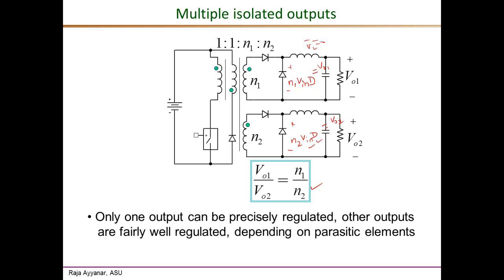Only one of the two output voltages can be precisely regulated, since there is only one duty ratio control. If the two outputs are identical and identically loaded, they can be very close, but under dynamic load variations, V_o2 will be fairly well regulated — though not as precisely as V_o1 — assuming good coupling between the windings. It is also possible to couple the two output inductors by winding them on the same core, resulting in savings in size and cost of the combined system.